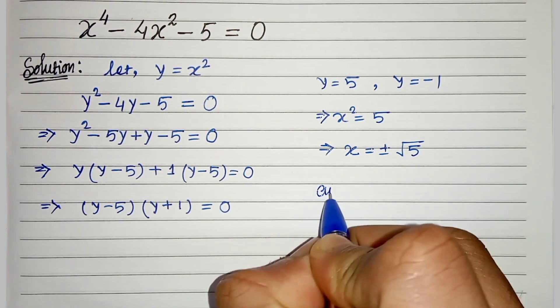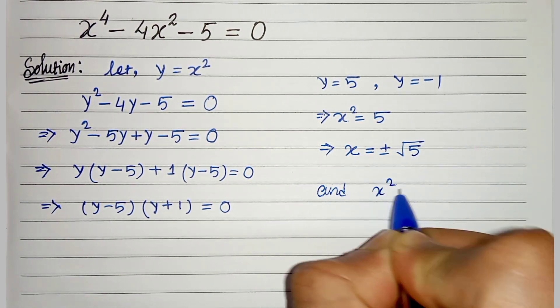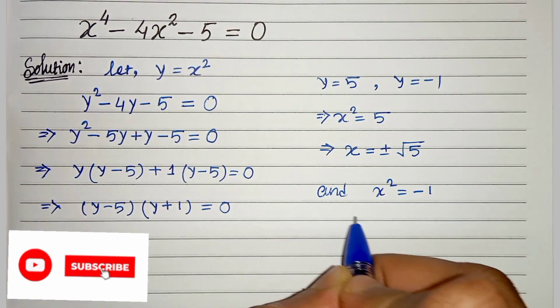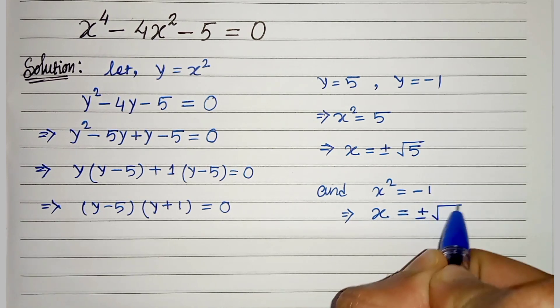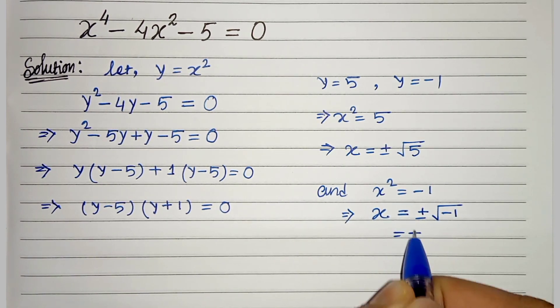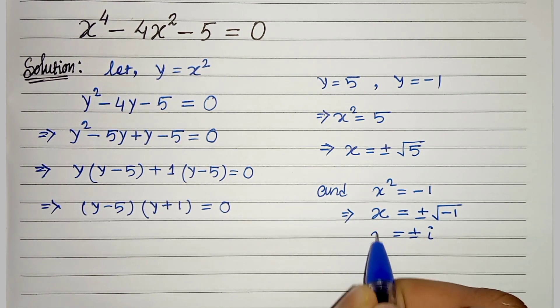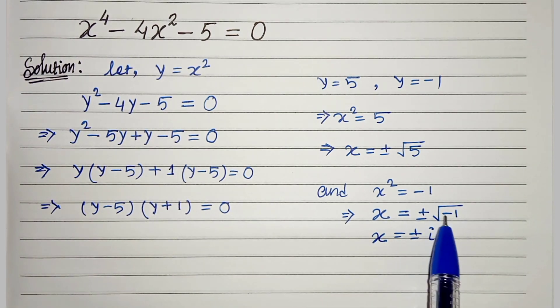And we have x square equals minus 1. Therefore, x equals plus minus root under minus 1 which is plus minus i. Since i can be written as root under minus 1, i is an imaginary number.